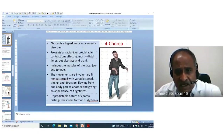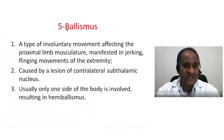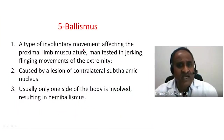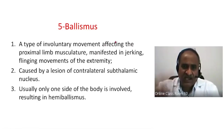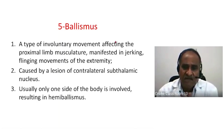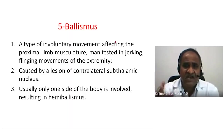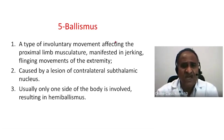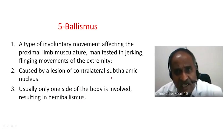Then comes ballismus — an involuntary movement disorder. You may have seen persons who suddenly throw their limbs outward. Hemiballismus affects only one half of the body — continuous jerking and flinging motions happening in the extremities. This is because of involvement of the subthalamic nucleus on the opposite side, and usually one side of the body is involved.